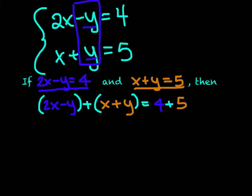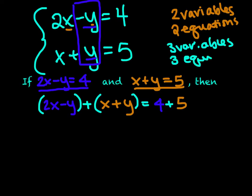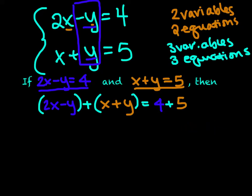One thing about equations: you need to have the same number of equations to be able to solve for that many variables. So if I have two variables — in this case x and y — I need two equations. If I have three variables, I need at least three equations. If I have one variable, I just need one equation. For example, if I have 3x is equal to 6, all I need is that one equation because I can figure out that x is 2.